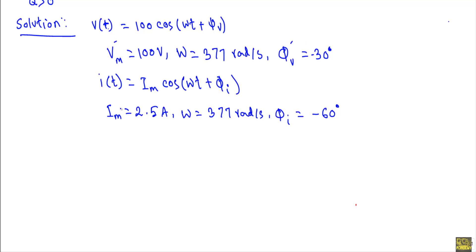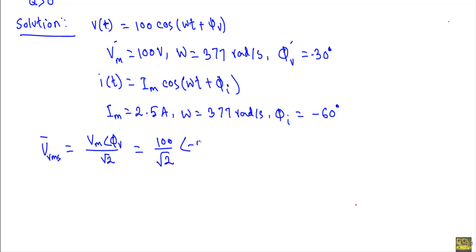Knowing Vm and φv, the RMS voltage phasor Vrms equals Vm∠φv divided by √2, which gives 100∠−30° divided by √2. Expressing this in rectangular form gives Vrms = 61.24 − j35.36 volts.